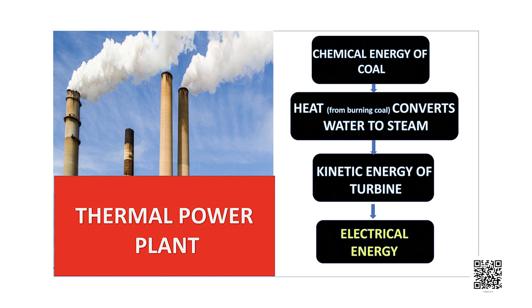In a thermal power plant, large amounts of fossil fuels — primarily coal — are burnt every day to heat up water and produce steam, which then runs the turbine to generate electricity. Many thermal power plants are set up near coal or oil fields. The term 'thermal power plant' is used because fuel is burnt to produce heat energy, which is converted into electrical energy. We must not forget the pollution caused by the gases released in the process.